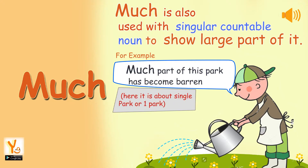Much is also used with a singular countable noun to show a large part of it. For example, much part of this park has become barren — here it is about a single park, or one park.